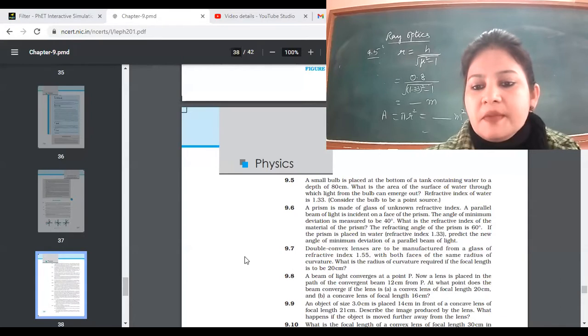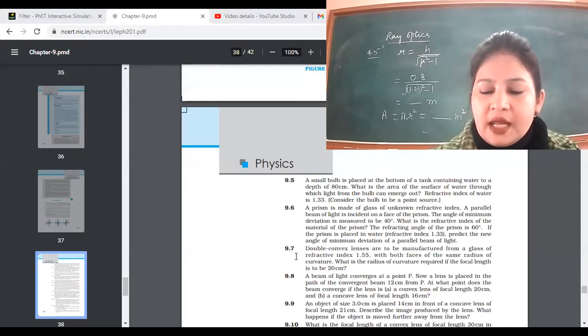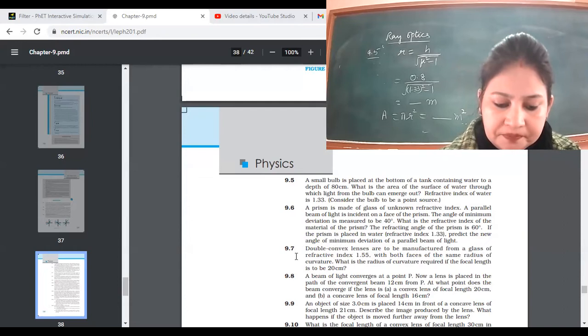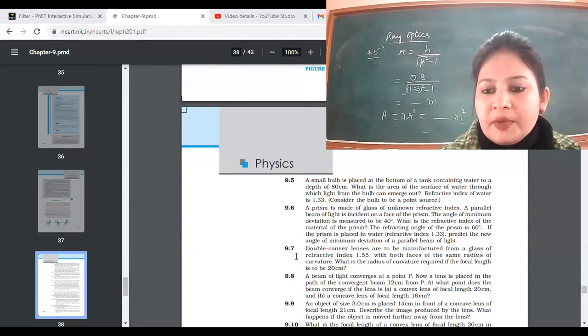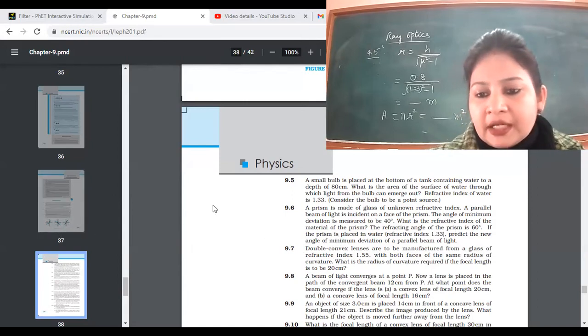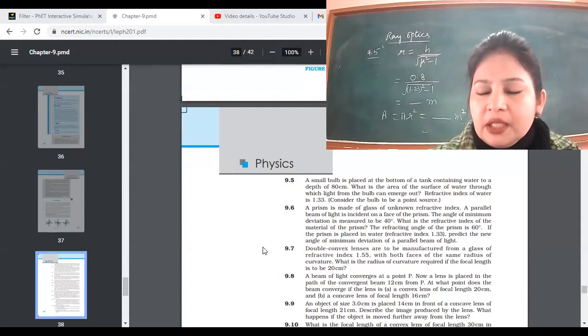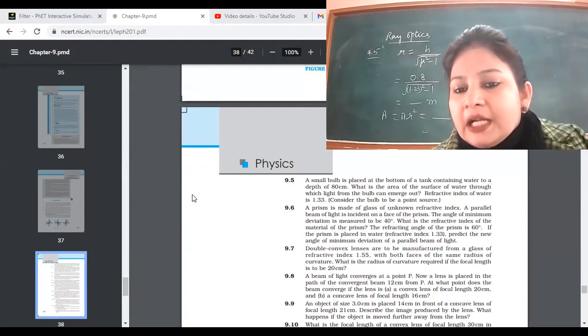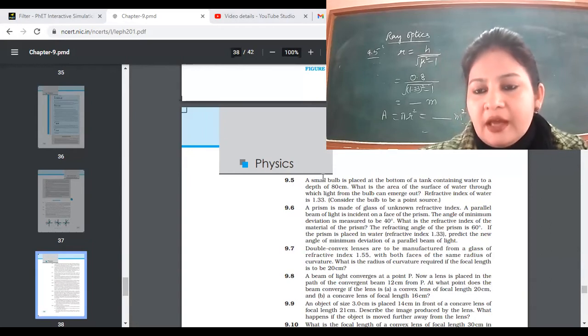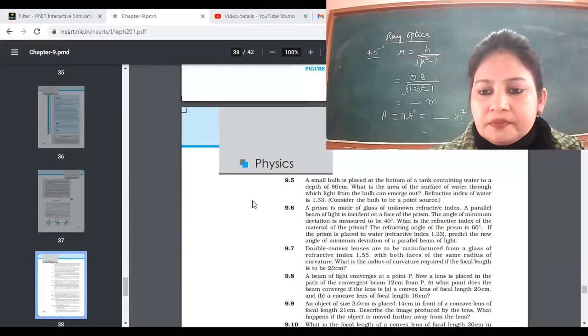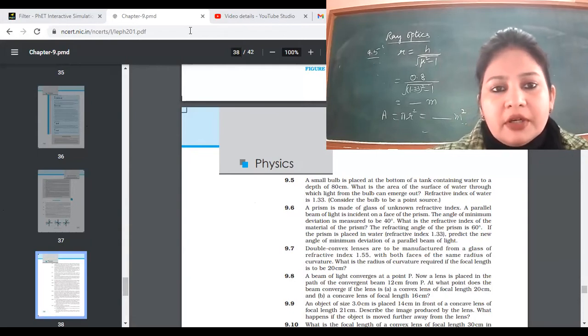Question 9.6: A prism is made of glass. A parallel beam of light is incident on a face of the prism. The angle of minimum deviation is 40 degrees. Refractive angle of the prism is 60 degrees. So you can calculate refractive index. Refractive angle of the prism A is 60 degrees and delta, angle of deviation, is 40 degrees. So what is the prism formula, Varun?